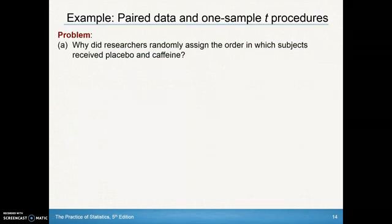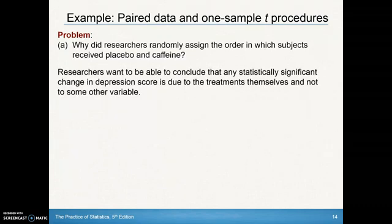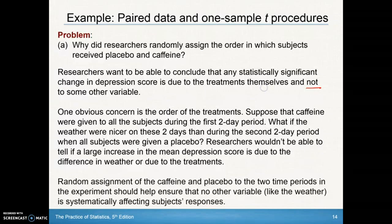Why did researchers randomly assign the order in which subjects received placebo and caffeine? The researchers wanted to conclude that any statistically significant change in depression score is due to the treatments themselves and not some other variable. One obvious concern is the order of the treatments — suppose caffeine were given to all subjects in the first two-day period and the weather were nicer then. Random assignment eliminates those other variables, limiting the effect of lurking variables on subjects' responses.